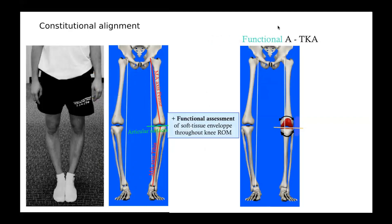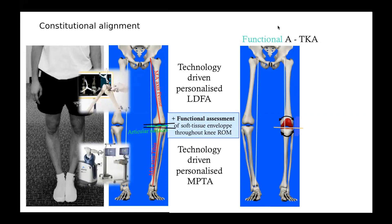Functional alignment is a newcomer. The goal is quite similar to the restricted KA concept — to maintain, to some extent, the constitutional knee anatomy while respecting some limits for alignment. However, the implants are not systematically aligned on a single axis, because implant positioning is defined by a sophisticated process that accounts for the individual limb and knee anatomy and knee soft tissue behavior. To perform functional alignment, you need technology — either a navigation or robotic system — that allows you to perform intra-operative 3D planning in order to assess dynamic or functional alignment and soft tissue.